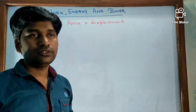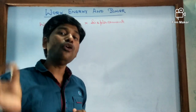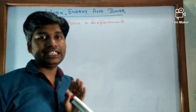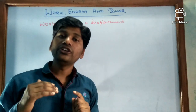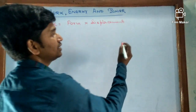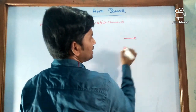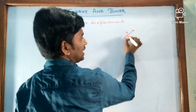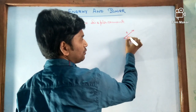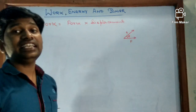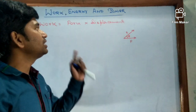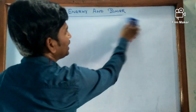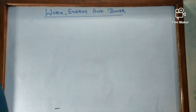Now it is not always the case that the applied force and displacement are in the same direction. So what will happen, and how will we find the work done when the applied force and displacement are in two different directions? Suppose a force is applied in one direction and produces displacement in another direction, with a certain angle between force and displacement. How can we find and measure the work done?